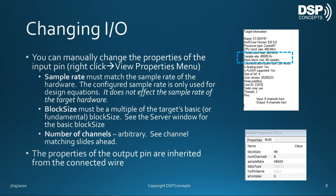You can manually change the properties of the system input pin, including the sample rate, but the sample rate must match the sample rate of the hardware. The configured sample rate is only used for design equations — it doesn't affect the actual sample rate of the target hardware.